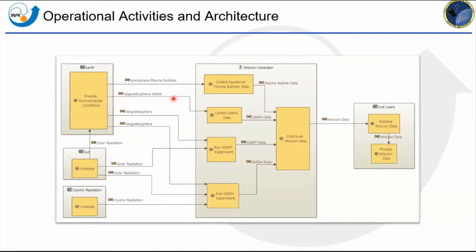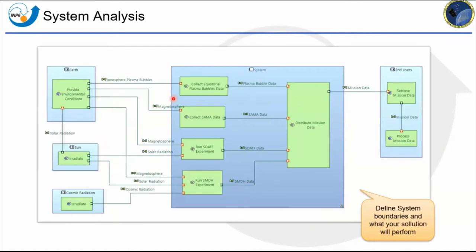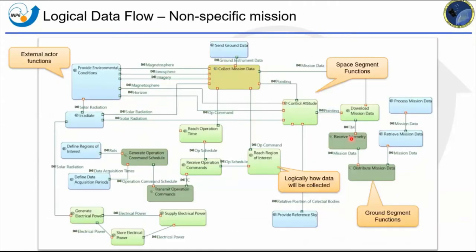For the system analysis step, we transform the operational activities into system functions and allocate them to the system. From the operational perspective we don't take the specific system into consideration — we just want to see what users want to accomplish. Then we determine which functions will be performed by the system and define its boundaries. For example, we could have ground instruments outside the system boundary that still participate in data collection. This step is quick — it determines boundaries and how users will retrieve the data.